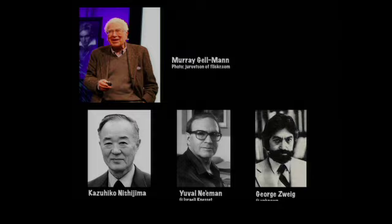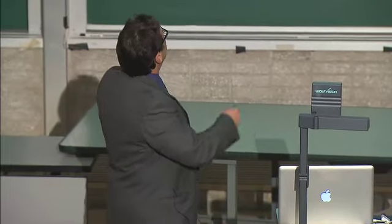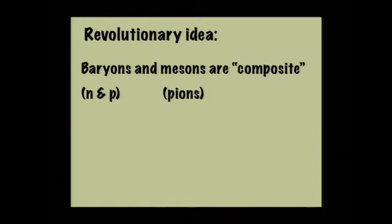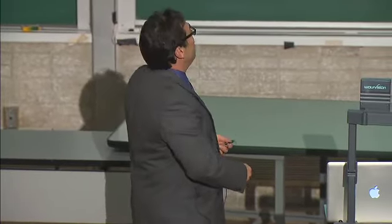Gell-Mann had the revolutionary idea that all of those mesons and baryons aren't fundamental particles — they're made of more fundamental things. If you think back to the history of the periodic table and nuclear atoms, when you end up with a lot of stuff, maybe they aren't really fundamental. He called these more fundamental things quarks — because he was reading Finnegan's Wake, which has a line 'three quarks for Mr. Mark,' and he liked the sound of it and he needed three of them, so he decided to name them quarks.